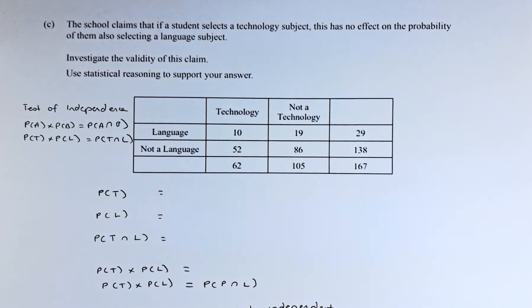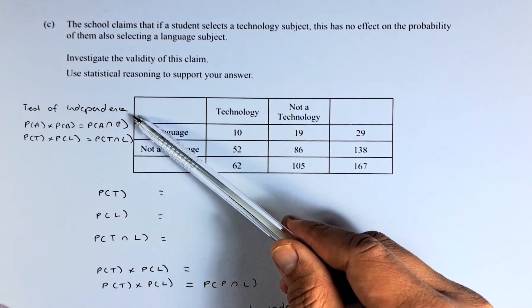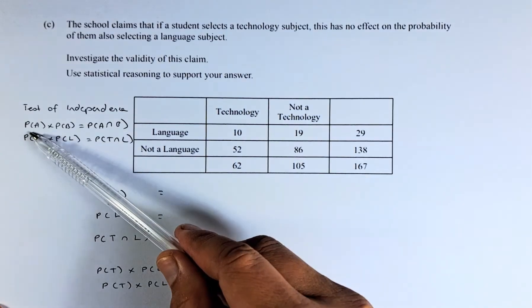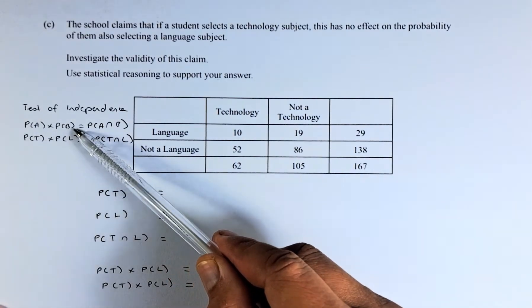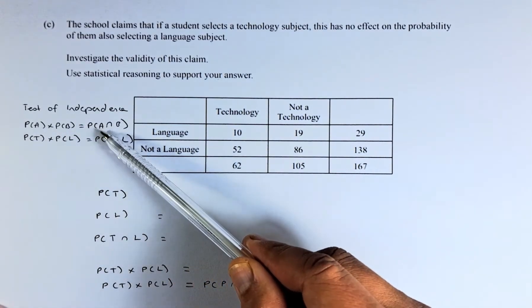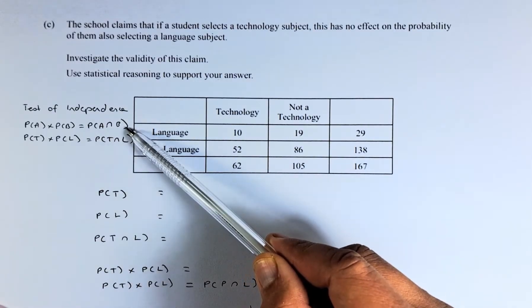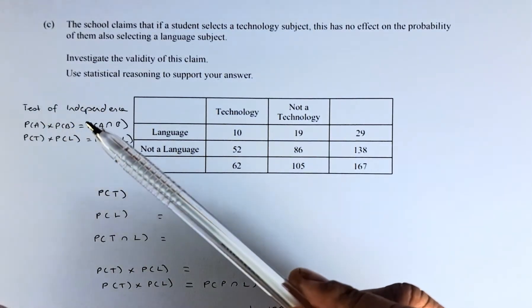In this question, we have to do the test of independence. If you do not know what the test of independence is, we define probability of A multiplied by probability of B. If they are equal to probability of A and B, then they are independent events.